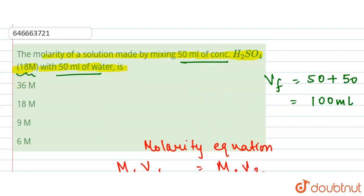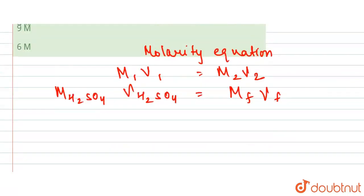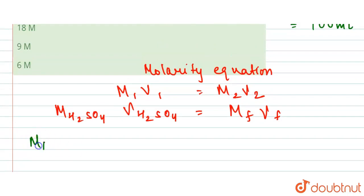The molarity of H2SO4 is given to us, that is 18 molar. Volume of H2SO4 is 50 ml. We have got the V final also, so we can find out the molarity, that is the final.